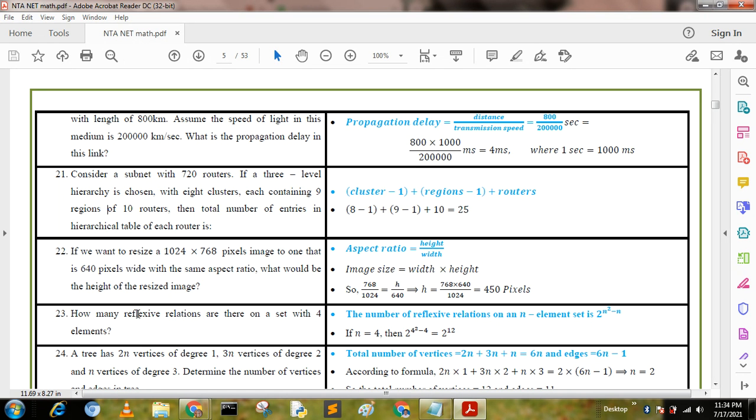Question number 23: How many reflexive relations are there on a set with four elements? Answer: The number of reflexive relations of an n-element set is 2 to the power of (n squared minus n). This is the formula. We put the value of n equal to 4 and we get the value 2 to the 12.